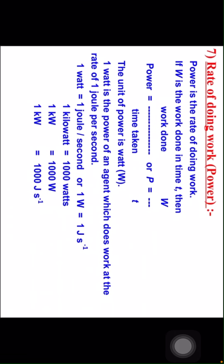Rate of doing work: power. Power is the rate of doing work. If W is the work done in time t, then power equal to work done divided by time taken, or P equal to W by t. The unit of power is watt, W. One watt is the power of an agent which does work at the rate of one joule per second. One watt equal to one joule per second. One kilowatt equal to 1000 watts. One kilowatt equal to 1000 joules per second.